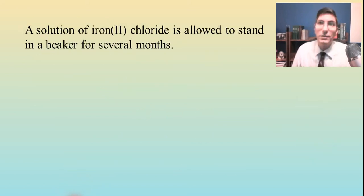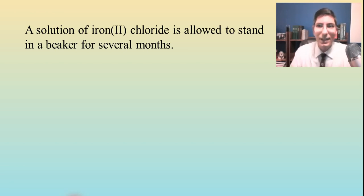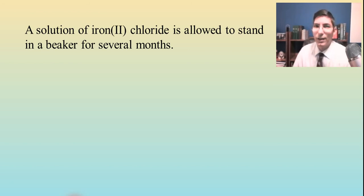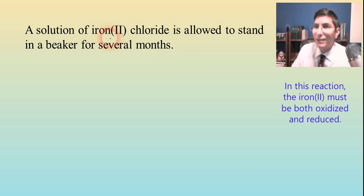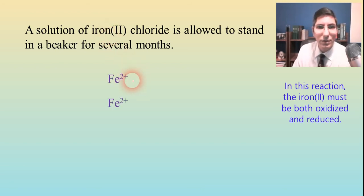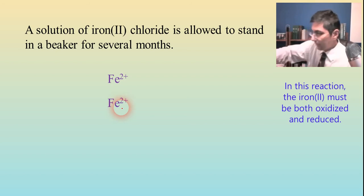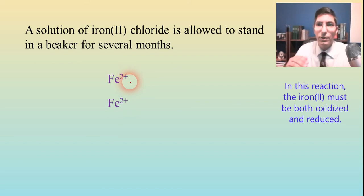Let's try another type of disproportionation reaction. Some students look at this and say it doesn't even look like a reaction at all: a solution of iron(II) chloride is allowed to stand in a beaker for several months. Sometimes these pop up on the AP exam and puzzle students because nothing seems to be happening. Anytime you have a transition metal solution compound standing in a beaker for weeks or months, that's a sign it's a disproportionation reaction. The iron(II) ion is going to be both oxidized and reduced at the same time - some of those ions are reacting with each other. So iron(II) is the reactant in both the oxidation and the reduction half-reactions.